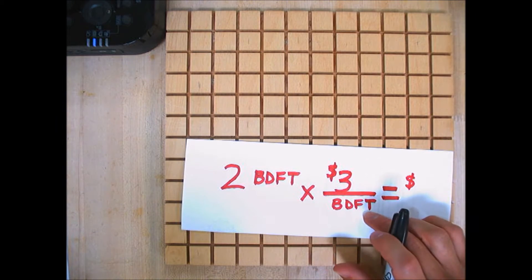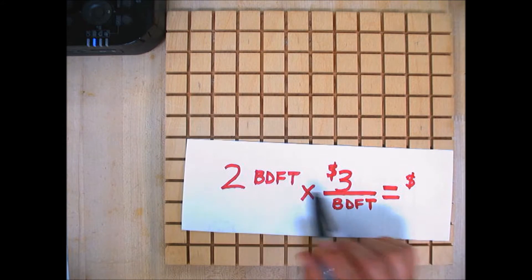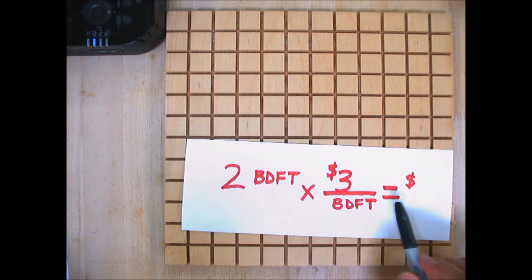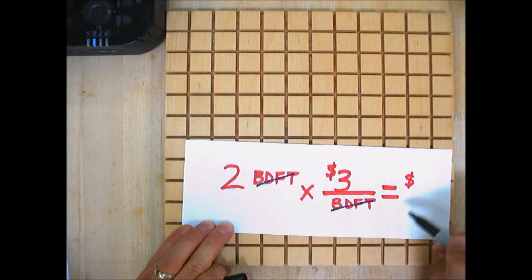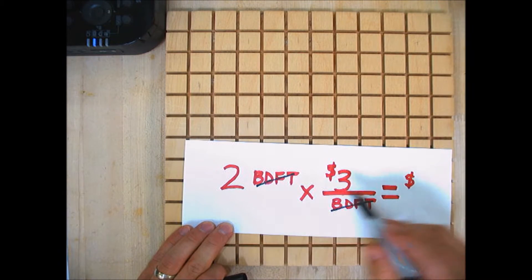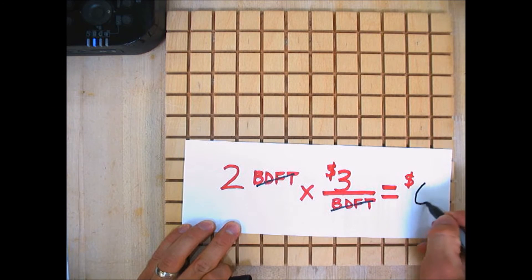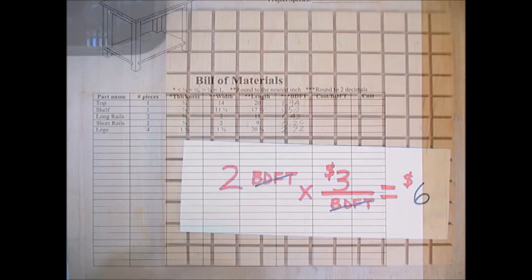Now when we multiply across, board feet over board feet will cancel out, and that's going to leave us with our dollar sign. That's what we want is cost. So two times three is six.